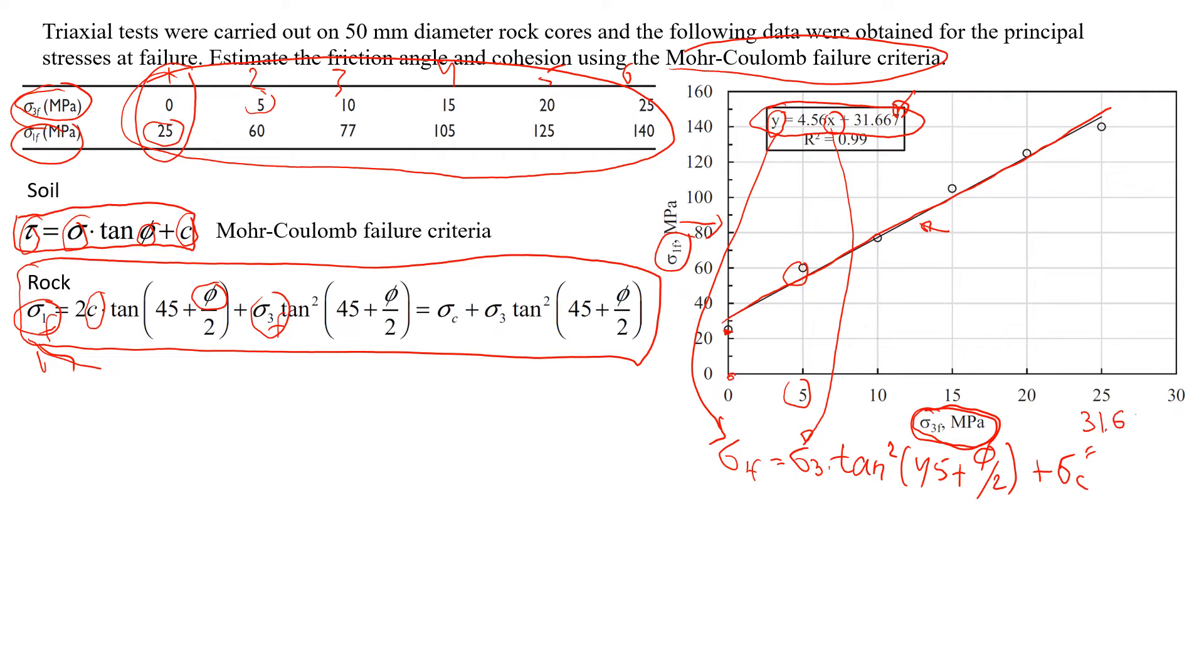So this means that this component of the equation 31.67 is going to be this sigma c, what we also call the unconfined compression strength. So we can get from this equation already that unconfined compression strength is 31.667 MPa.